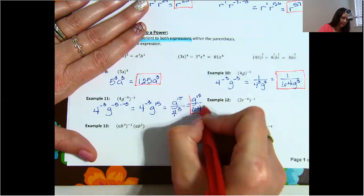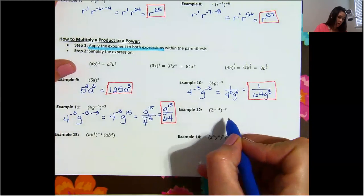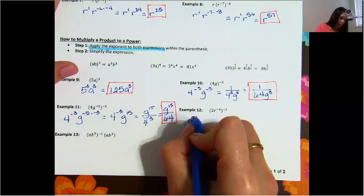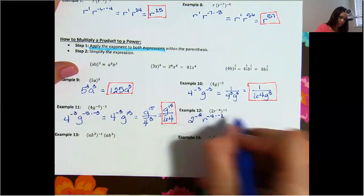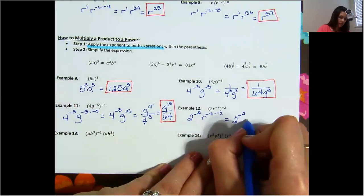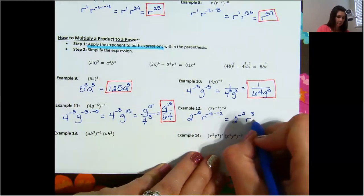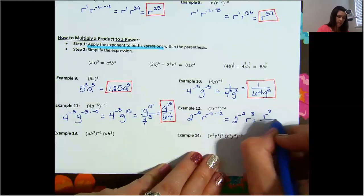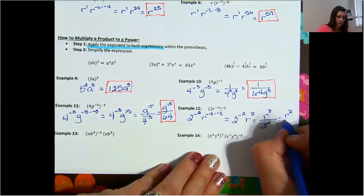I know this seems like a lot of steps, but I need to make sure you understand them, so you will need to show all of your work. Example 12: 2 to the power of negative 2 times R to the power of negative 4 times negative 2. We have 2 to the power of negative 2 times R to the power of 8, and we have to move the 2 down. So the answer is R to the power of 8 over 2 squared, which is R to the power of 8 over 4.